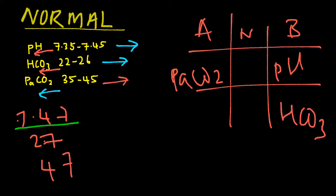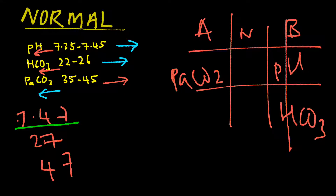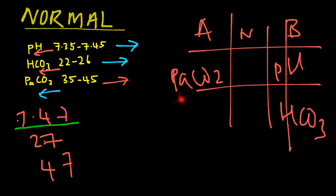As a result, the tic-tac-toe goes this way. pH is under the basic column, so it is alkalosis. HCO3 is metabolic, so we have a metabolic alkalosis. And the PaCO2 is on the opposite end, so it is partially compensating the alkalosis. The interpretation would be partially compensated metabolic alkalosis.